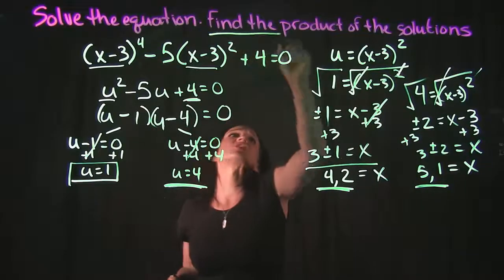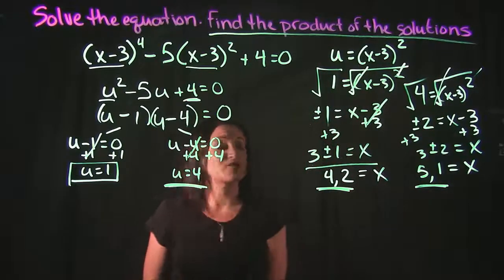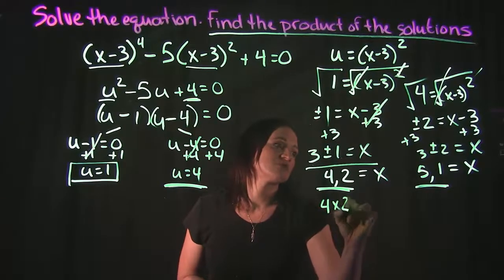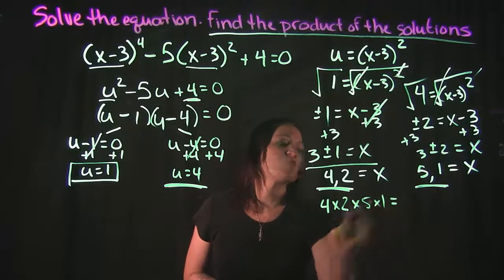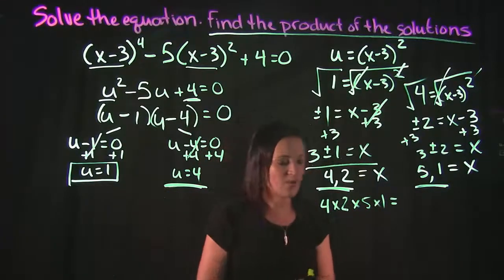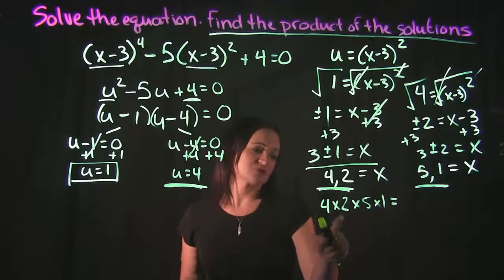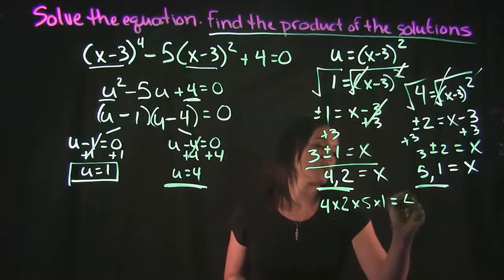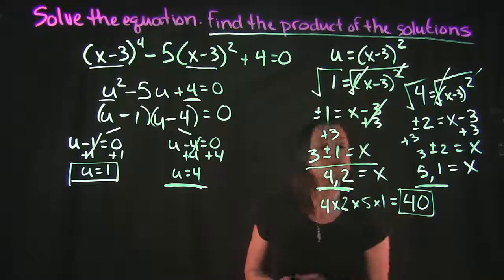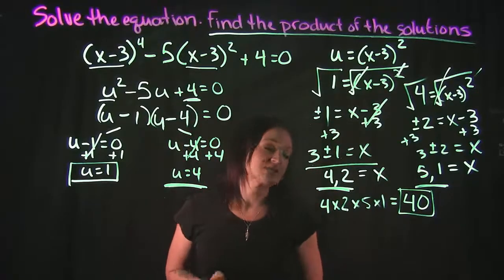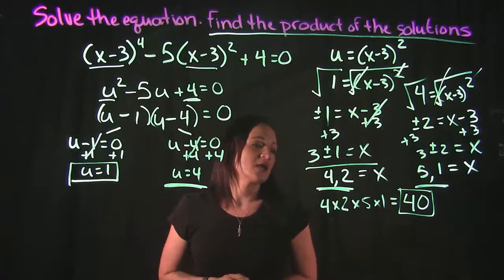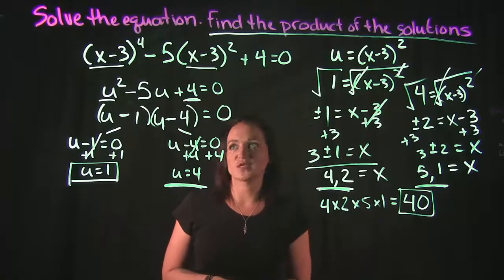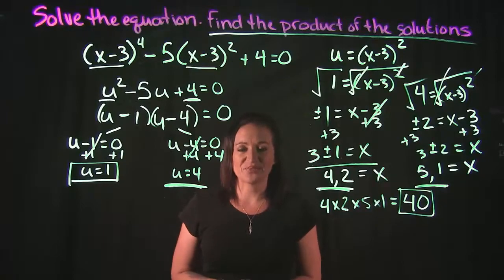The problem asks us to find the product of the solutions, so we compute 4 times 2 times 5 times 1. That gives us 4 times 2 equals 8, times 5 equals 40, times 1 is still 40. So 40 is our final answer, though 4, 2, 1, and 5 are the actual solutions for x in this equation.